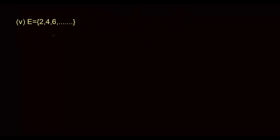Set E is {2, 4, 6, ...} continuing to infinity — an infinite set. This is where the power of the set builder form comes into play, since something written with dots may be misinterpreted. So: E is the set of all x such that x = 2n, where n belongs to the set of natural numbers, with no upper limit on n since it includes all multiples of 2.